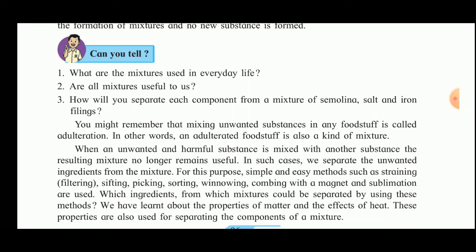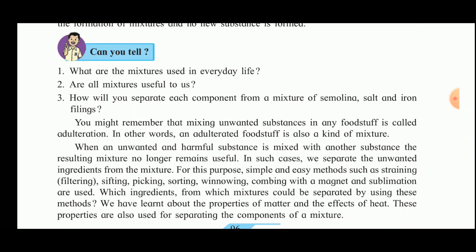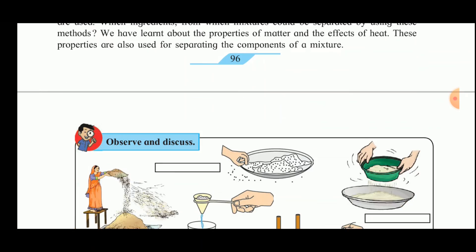For this purpose, simple and easy methods such as straining (filtering), sifting, picking, sorting, winnowing, combing with a magnet, and sublimation are used. Which ingredients from which mixture should be separated by using these methods? We have learned about properties of matter and the effects of heat. These properties are also used for separating the components of mixtures.